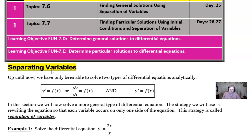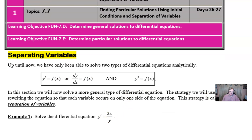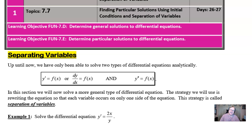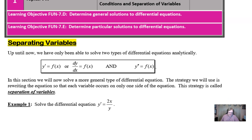Up until now, you have only been able to solve two types of differential equations — you worked on this a little bit back in Unit 6. If the dy/dx is by itself, you could take your integral and just move accordingly to find the function. But in this section, we will now look at a more general strategy because now we won't necessarily have all our variables by themselves. What if you have x's and y's all mixed together on the right side? Let's take a look at how to separate the variables in example one.